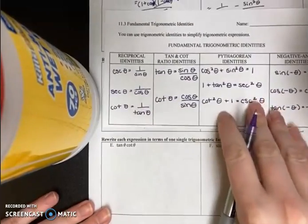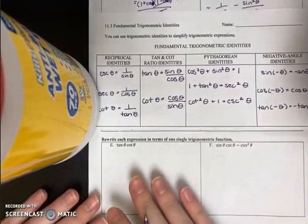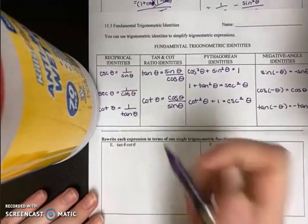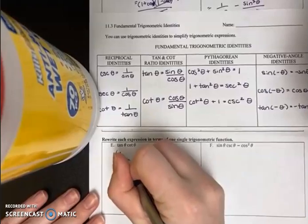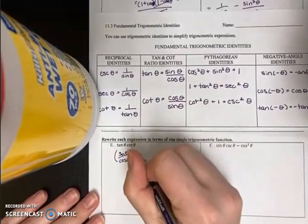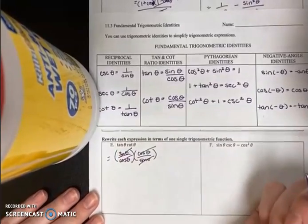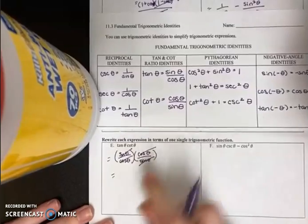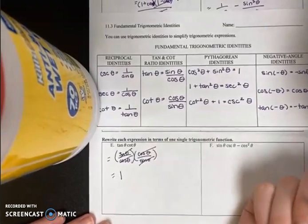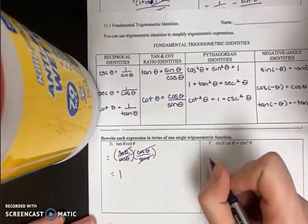Lastly, we're going to rewrite the expression in terms of a single trigonometric function, or it could be a number value like 0, 1, or 2. Taking a look at part E, it's currently two trig expressions and I just want one. So I'm going to rewrite tangent as sine theta over cosine theta, and cotangent as cosine theta over sine theta — using the ratio identities. We can see the cosines cancel and the sines cancel. A common mistake is that students write the final answer as 0, but that's not true. Whenever we divide something by itself, it's equivalent to 1. So the final answer is 1.